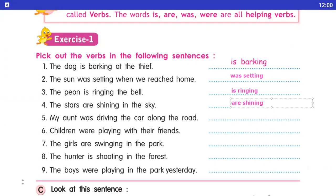Number five: my aunt was driving the car along the road. Aunt kya kar rahe hai? Car drive kar rahe thi. Was driving — was isme humara helping verb hai.